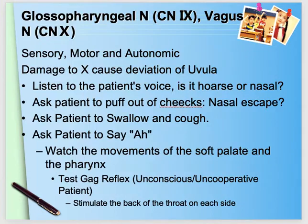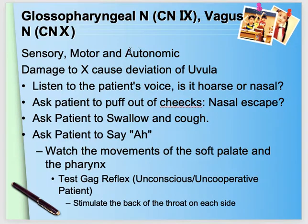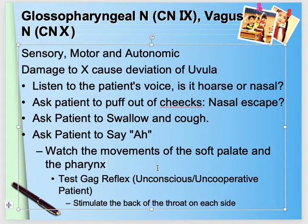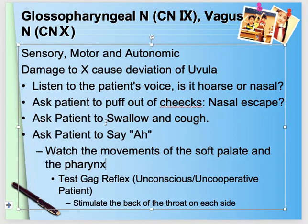Cranial nerves nine and ten — glossopharyngeal and vagus — are tested together because both supply pharyngeal muscles used for speaking and swallowing. We ask the patient to open their mouth, check if the uvula is midline, and ask them to say 'aah' to see if movement is equal bilaterally. We also test the gag reflex: touching the back of the oral cavity normally produces a gag response; if these nerves are damaged, the gag reflex is absent.